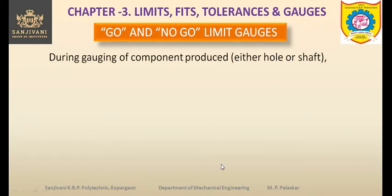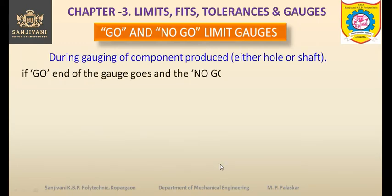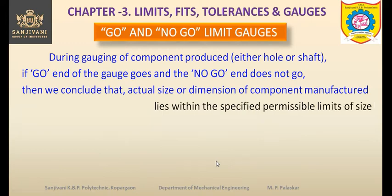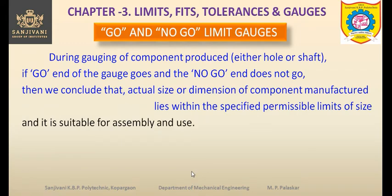During gauging of a component — either hole or shaft — if the go end of the gauge goes in and the no-go end does not go in, then we conclude that the actual size or dimension of the component manufactured lies within the specified permissible limits of size, and it is suitable for assembly and use. The go end should go and the no-go end should not go.